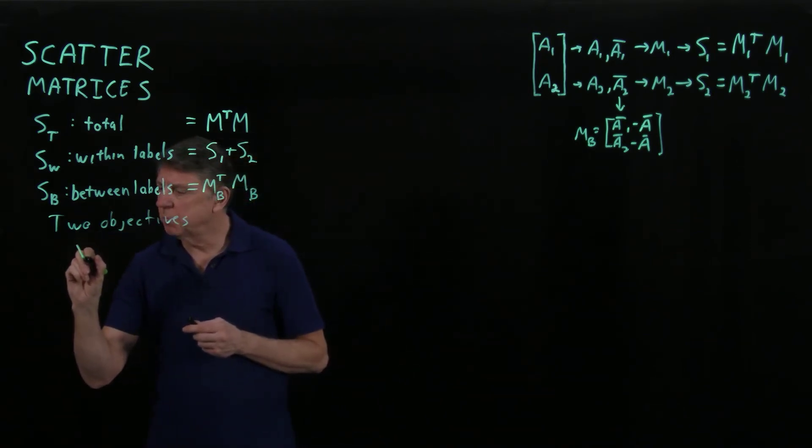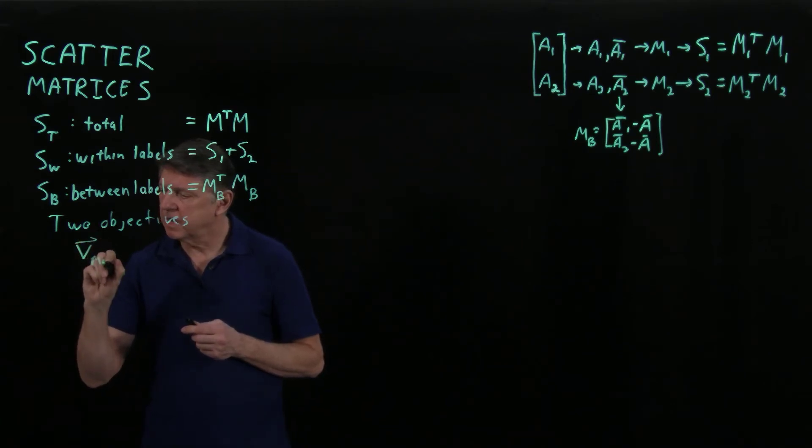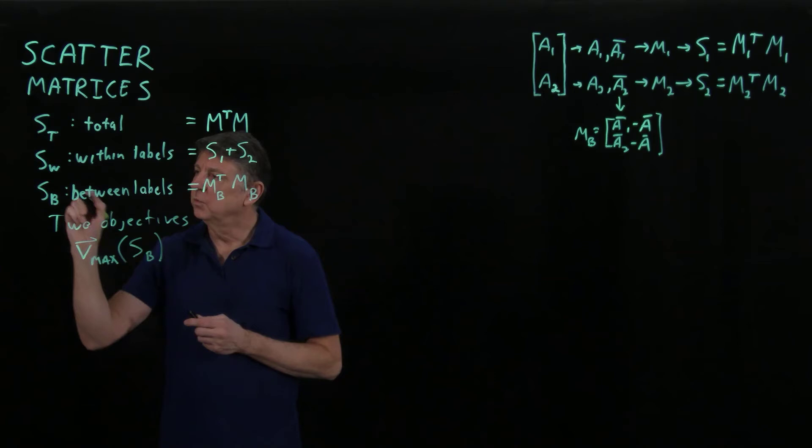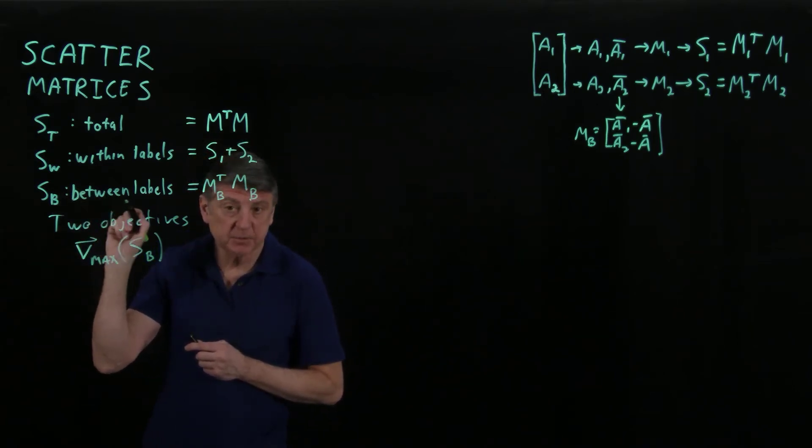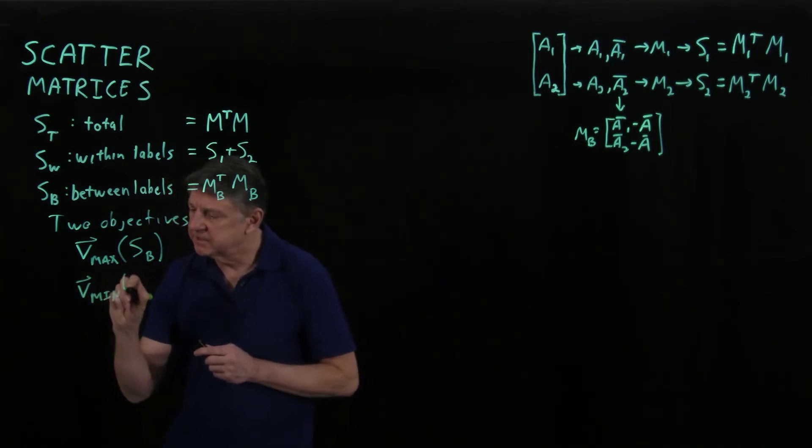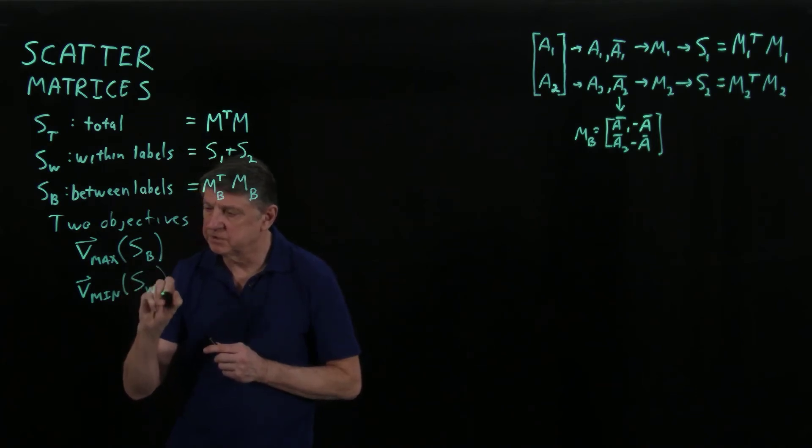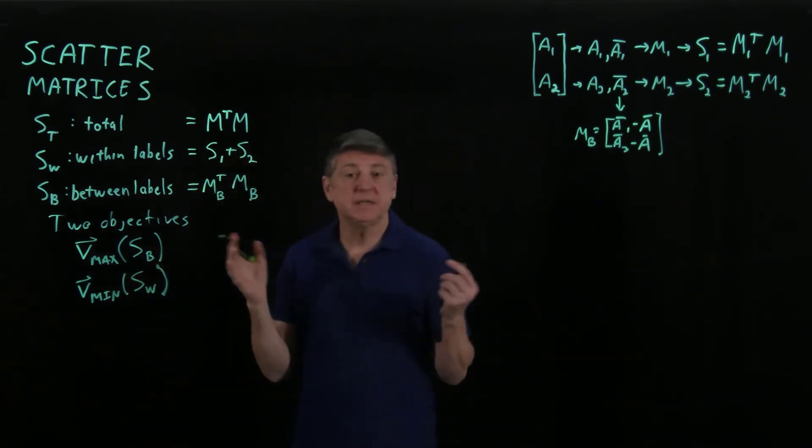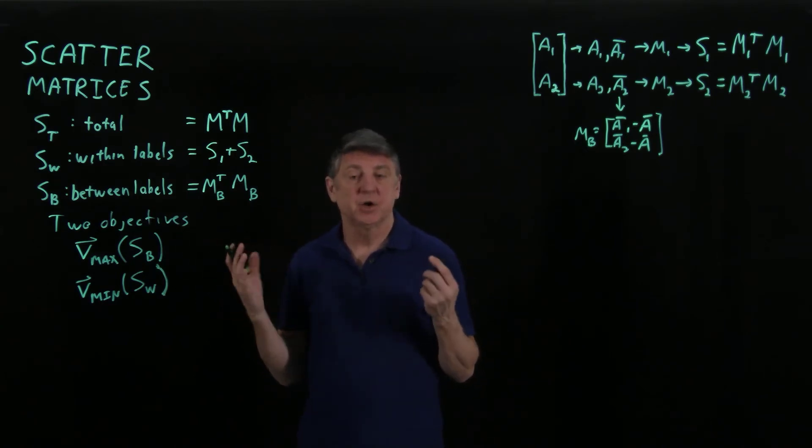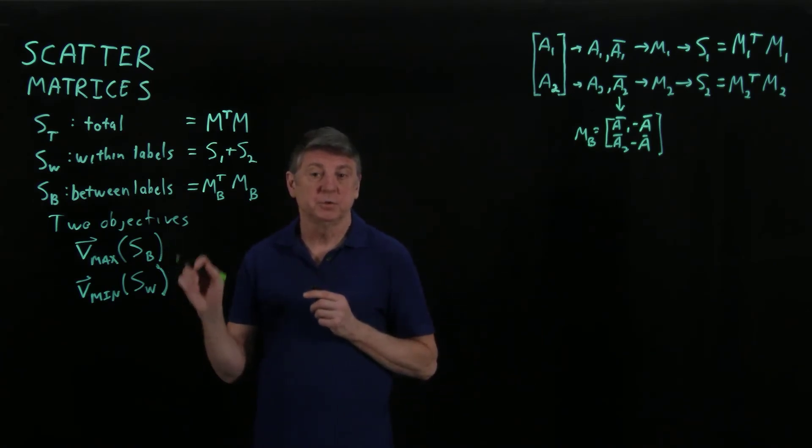What we want to do is we want the maximum eigenvector of the between labels matrix. So we want to maximize the scatter between labels. Whatever direction we're picking, we want it to separate the labels as well as possible. And we also want, while we're doing that, to minimize the scatter within the labels. And you can see that, in general, these are independent problems and we'll get independent eigenvectors.